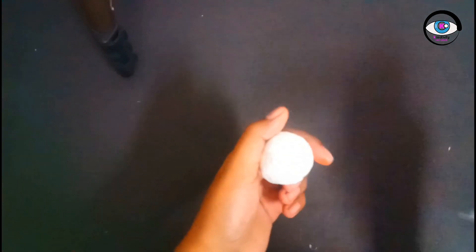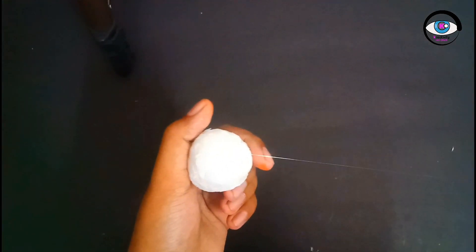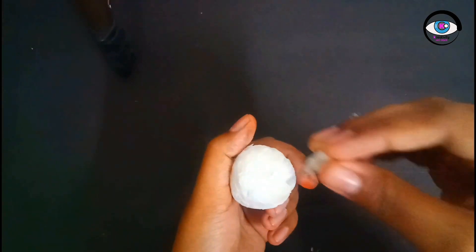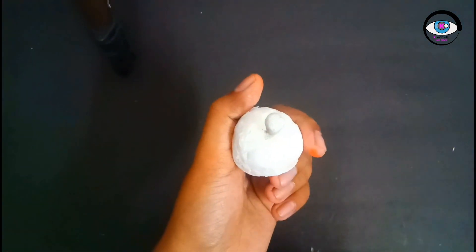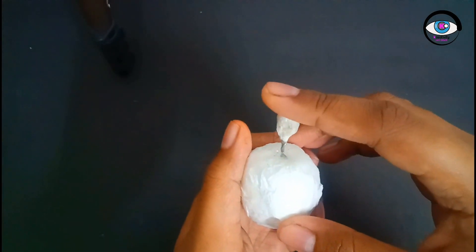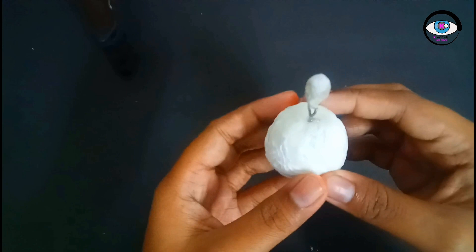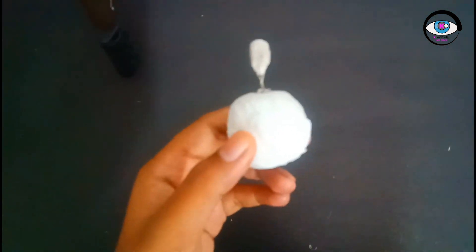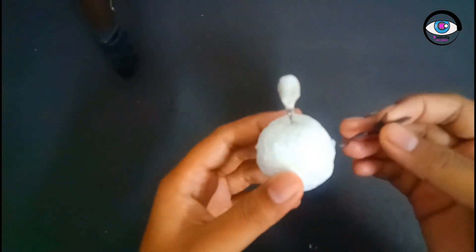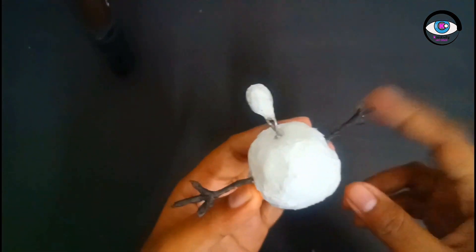Now, attach another bent wire structure to the bigger ball-like structure using hot glue. After that, attach a layer of tissue paper to cover the hot glue.